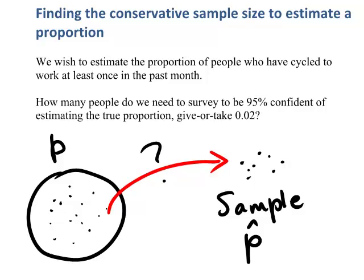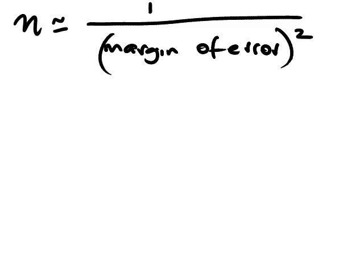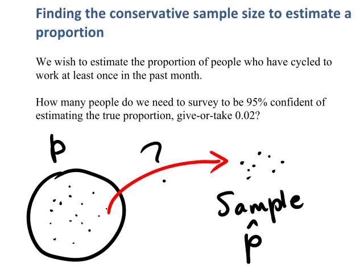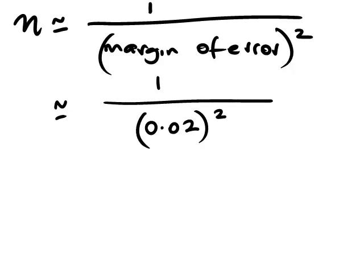In this situation we have an approximate formula that we can use to estimate the required sample size. The sample size N is approximately equal to 1 divided by the margin of error squared. This is an approximate formula that only works if you want to be 95% confident. In this example the margin of error is 0.02, and so the required sample size is going to be approximately 1 divided by 0.02 squared, which on our calculator we can find is about 2500.